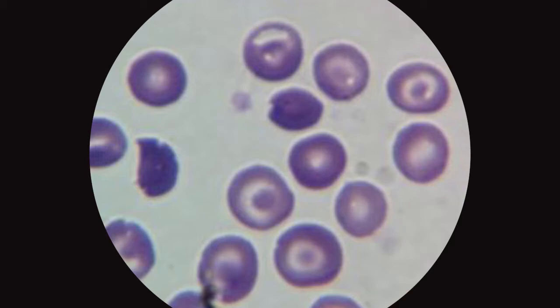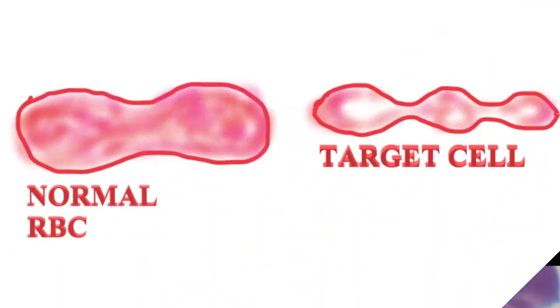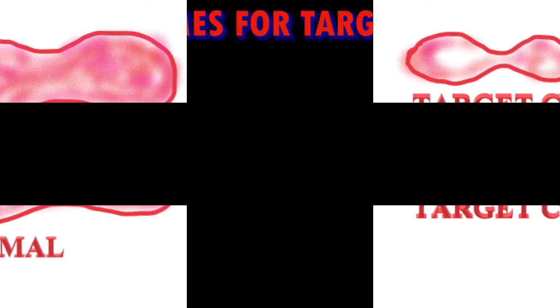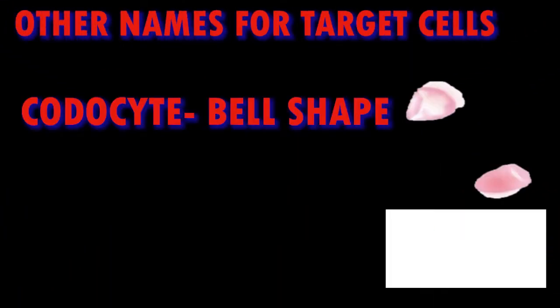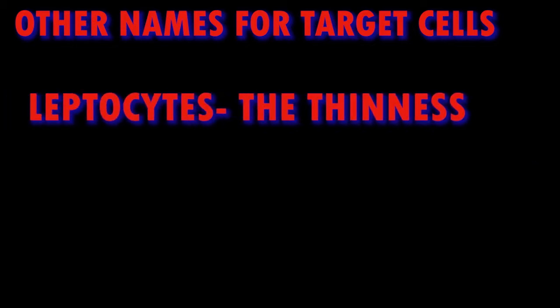Target cells are erythrocytes that resemble a shooting target. A central red bull's eye is surrounded by a clear ring and then an outer red ring. There is an excessive ratio of membrane lipid to the cell volume, making the cells thinner than normal.